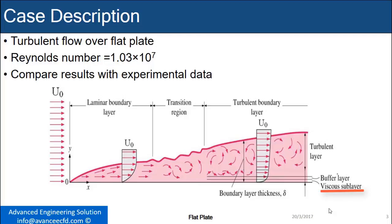The viscous sublayer, or laminar sublayer, is the region near a no-slip boundary in which the flow is laminar.